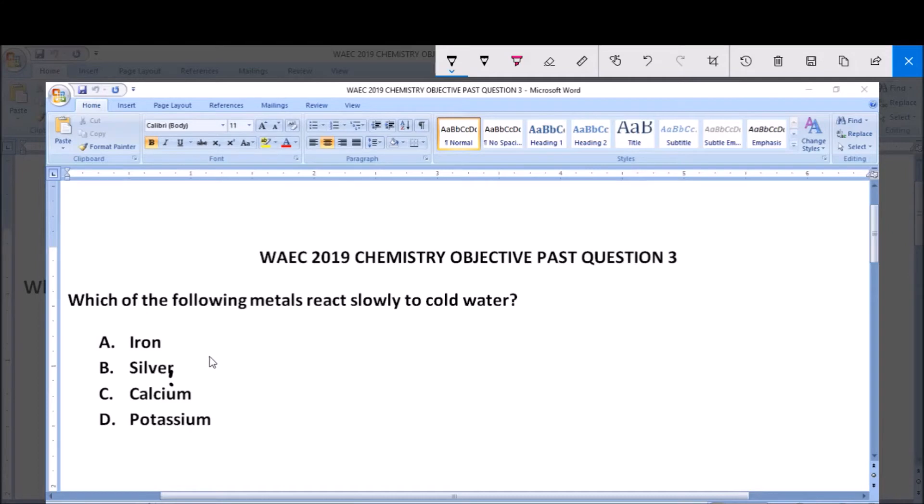On the electropositive series, first you have potassium, followed by sodium, then calcium, followed by magnesium, then aluminum, then zinc, then iron.